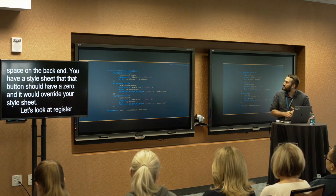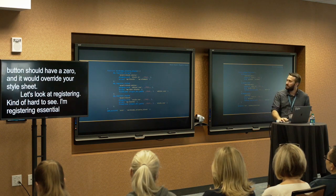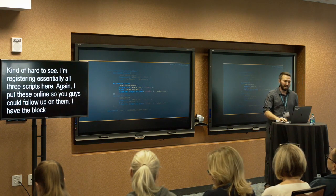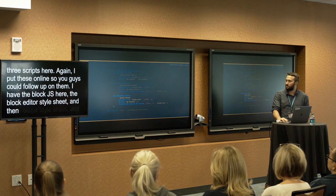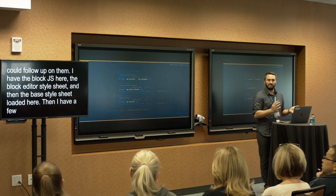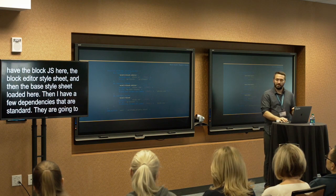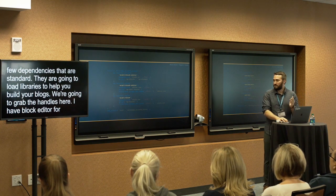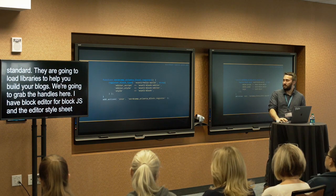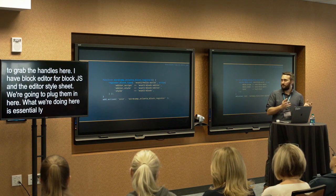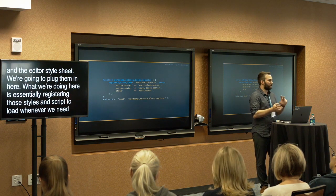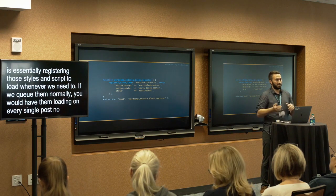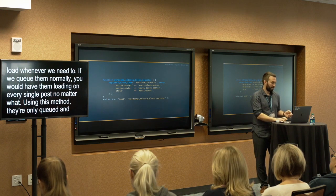For registering, I'm registering essentially all three scripts — the block.js, the block editor stylesheet, and the base stylesheet — with a few standard dependencies to load libraries that help you build blocks. I have handles like WCATL-block-editor for both the block.js and editor stylesheet, and WCATL-block for the styles. What we're doing is registering those styles and scripts to load whenever we need them. If we enqueued them normally like a theme stylesheet, they'd load on every single page and post no matter what. Using this method, they're only enqueued when actually needed.